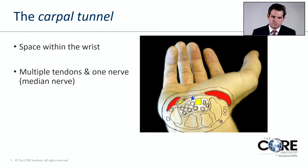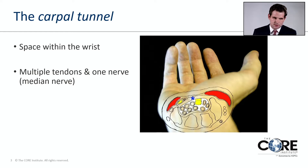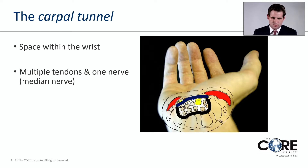Where does it get its name from? It is a problem within a tunnel or space within the wrist called the carpal tunnel. It's a normal part of our wrists and everyone is born with this space. Inside this tunnel there are nine tendons and one nerve called the median nerve that travel out to the fingers. The tunnel is shaped like a rectangular box — the natural arch of the wrist bones make up three sides of the box, and one side is made up of a ligament called the transverse carpal ligament, which will be important when we discuss surgery.